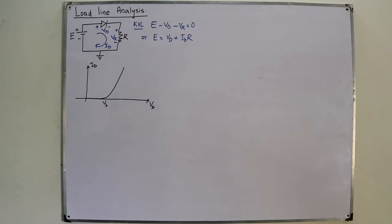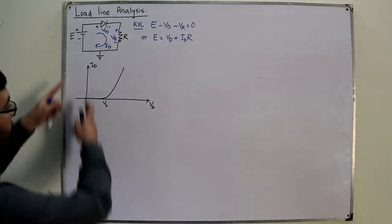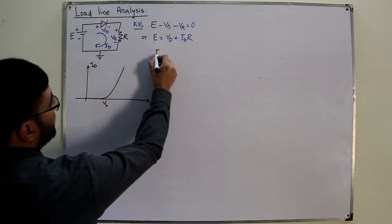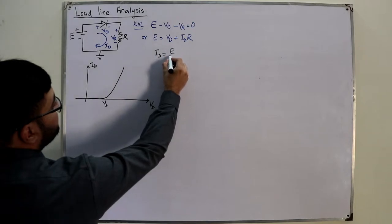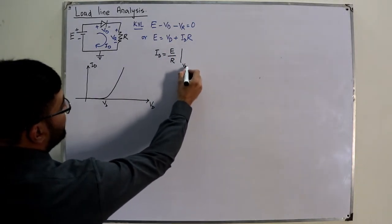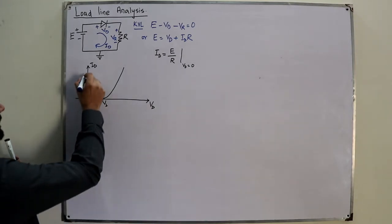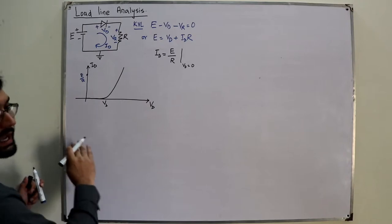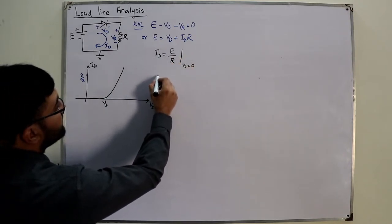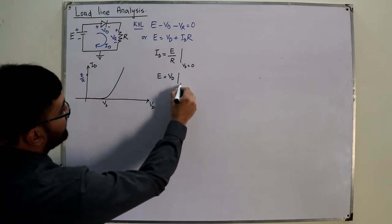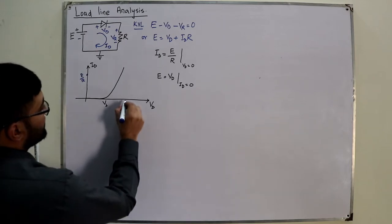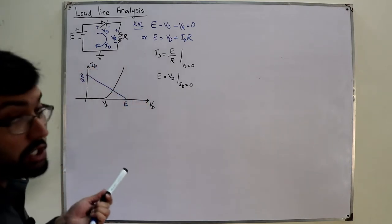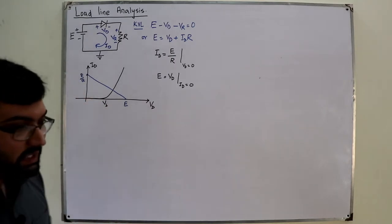Since it's a line, we need two points — the two intercepts. For the y-intercept, set VD equal to zero, giving ID equals E upon R. For the x-intercept, set ID equal to zero, giving VD equals E. Plotting these two intercept points and joining them gives us our load line on the diode characteristic curve.